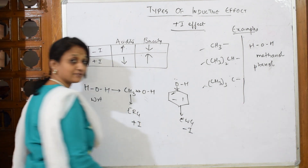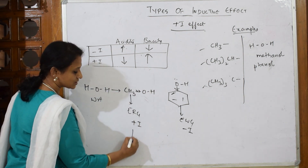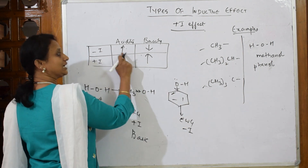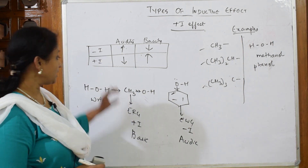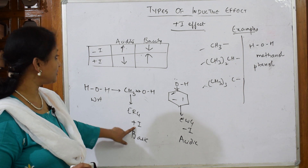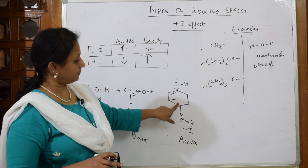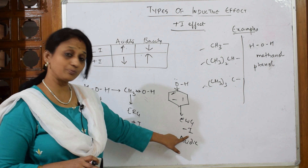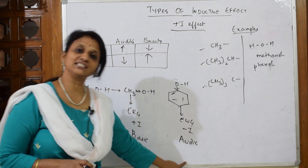Electron releasing group shows +I effect, which increases basicity — so methanol is basic in nature compared to water. Electron withdrawing group shows -I effect, which increases acidity — so phenol is acidic in nature. To summarize: electron releasing group → +I effect → more basic; electron withdrawing group → -I effect → more acidic.